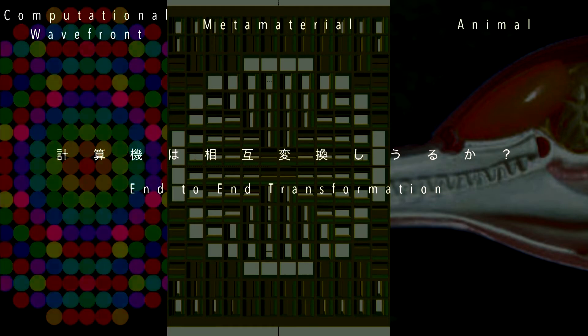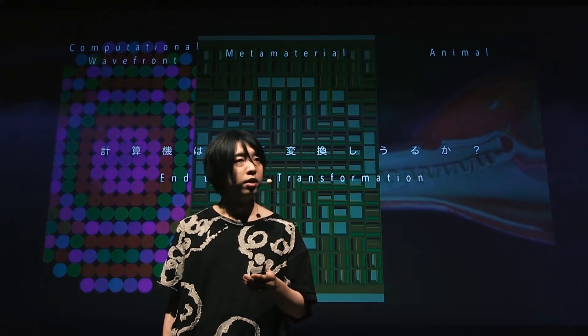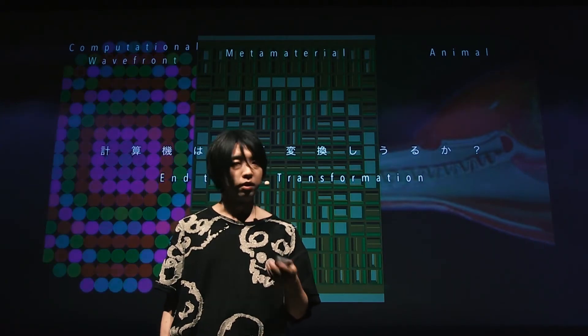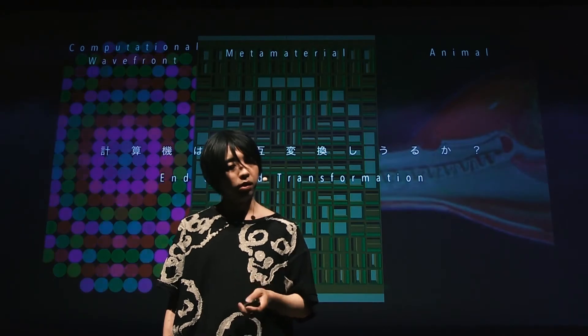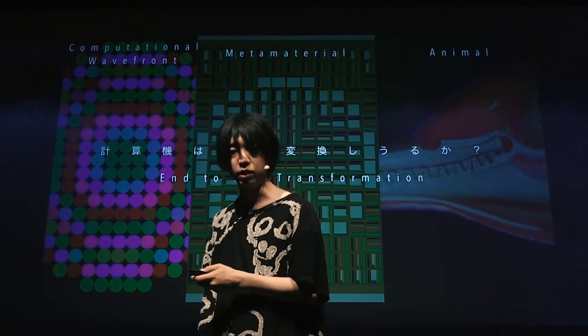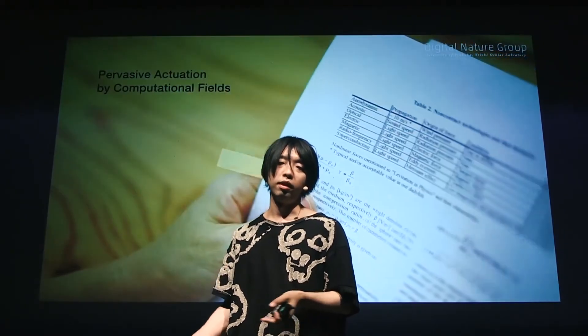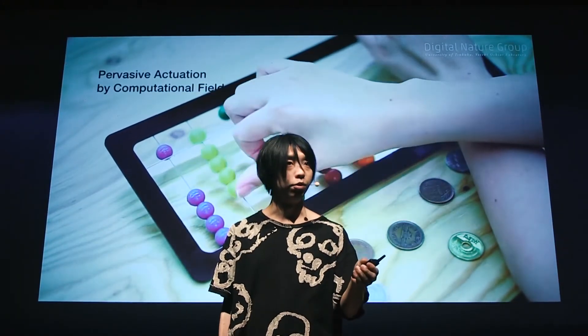My current interest in both research and art is this kind of end-to-end transformation — computational wave fronts, metamaterials, animals, and biological species — representing how they can alter the wave field towards physical representation. We now have machine learning and plenty of computational resources, so we can connect optimization of the computational wave front towards the animal process and towards metamaterials. This question exists in my research and art. This was my PhD work: ambient actuation by computational wave front using the acoustic field or ultrasonic field.